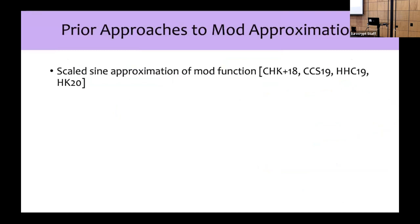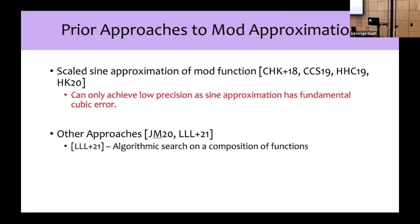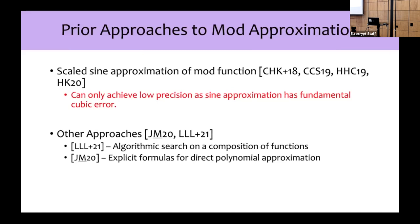What were some prior approaches to approximating the mod function? Several works used a scaled sign approximation, but this can only achieve low precision since the sign approximation has a fundamental cubic error from the mod function. The work of LLLplus21 approximated the mod function by performing algorithmic search on a composition of functions, and the work of JM20 gave explicit formulas for direct polynomial approximation using modular Lagrange interpolation. However, one issue with these works is that the polynomial coefficients can be too large, which causes more ciphertext modulus bits to be consumed when the polynomial is evaluated homomorphically.